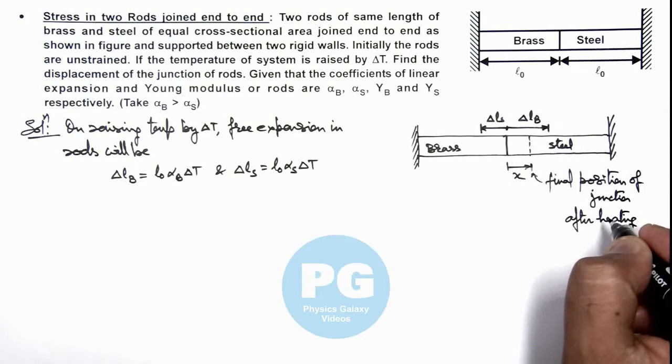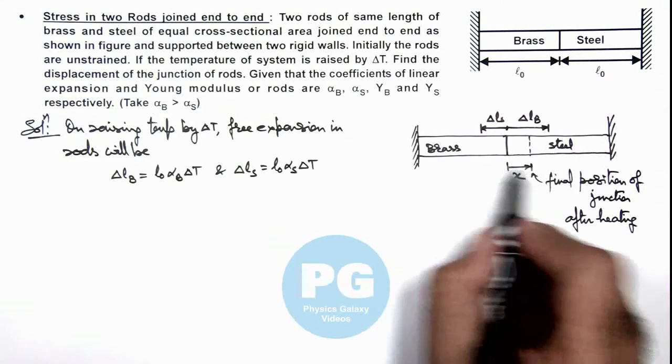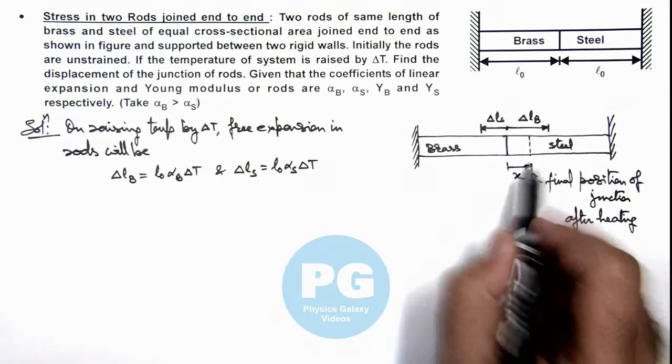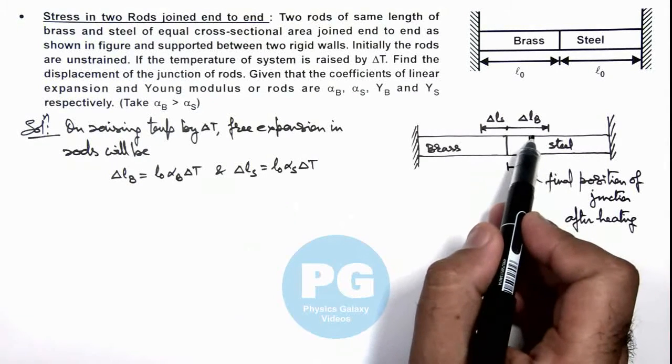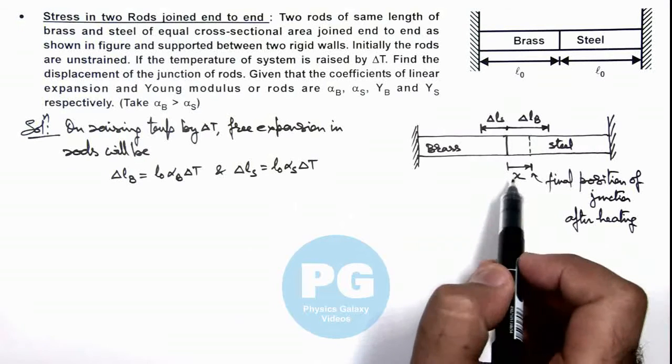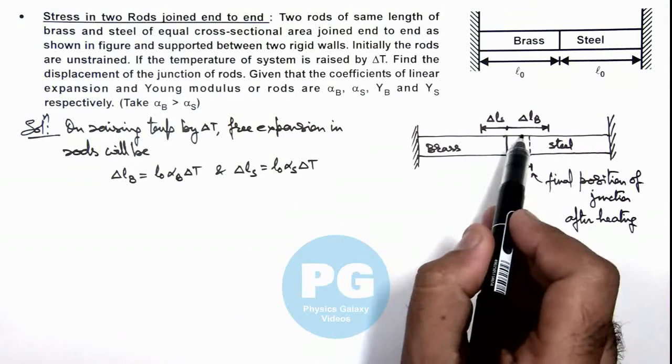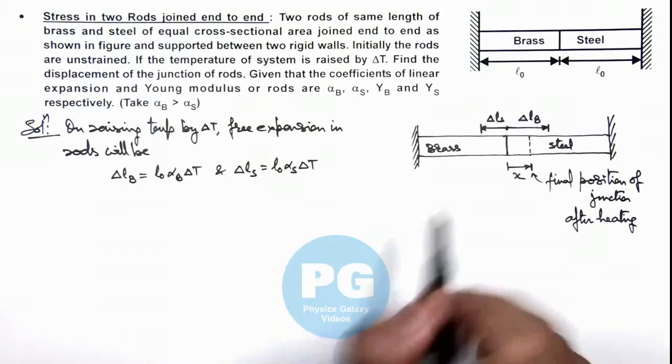Now in this situation, if junction is displaced toward right by x, we can see brass will get compressed elastically by a length ΔLB minus x, and steel will get compressed by a length ΔLS plus x.